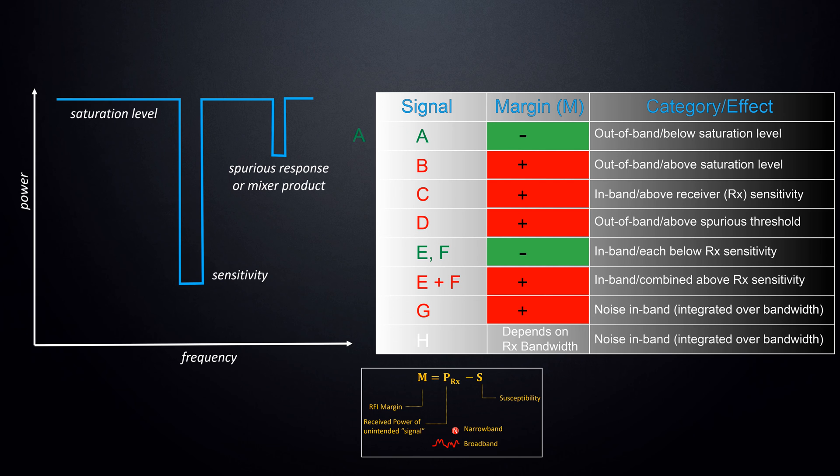These are the possible margins for a number of narrowband and broadband interfering signals. Positive margins are shown in red, indicating that degradation may occur. Negative margins are shown in green, which is good. It quantifies in terms of power how much more interference a receiver can tolerate before degradation occurs.